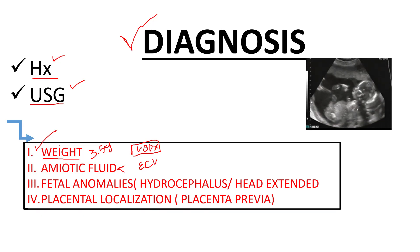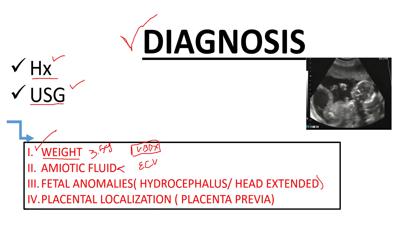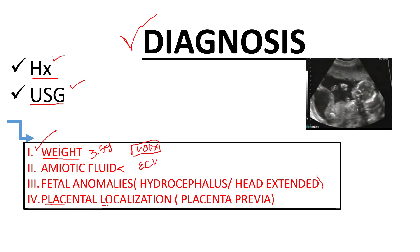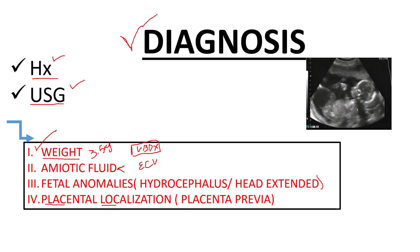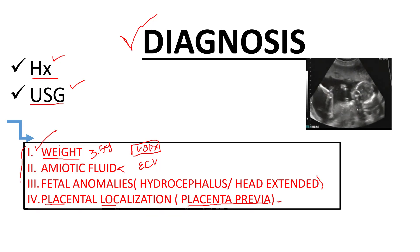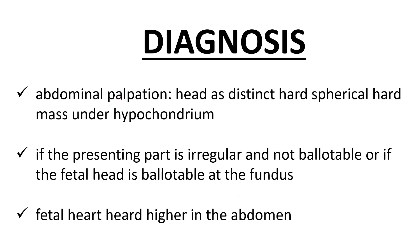Third, on ultrasound look for fetal anomalies like hydrocephalus and extended head. If you find any fetal anomaly, the pregnant lady is not a candidate for vaginal breech delivery or external cephalic version — go for C-section. Fourth, look for placental localization. If there is placenta previa, you cannot do vaginal breech delivery or external cephalic version.